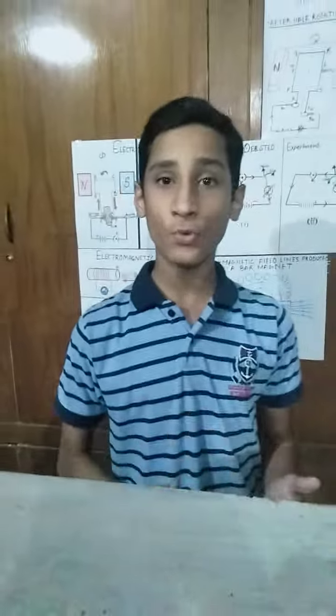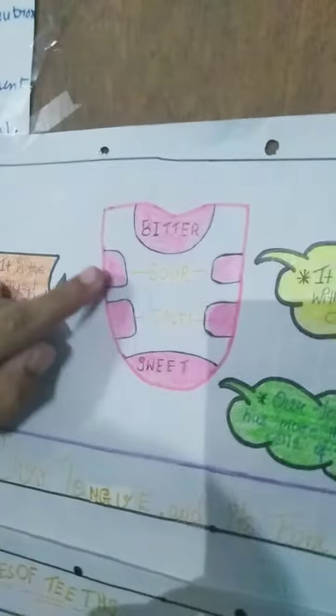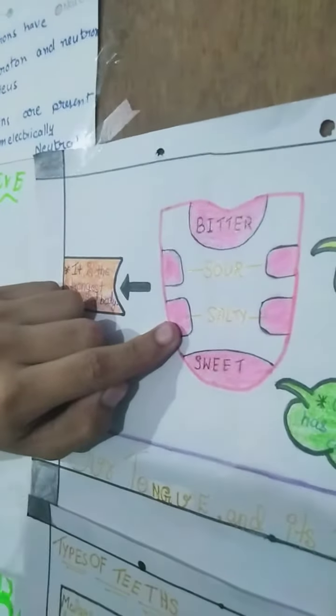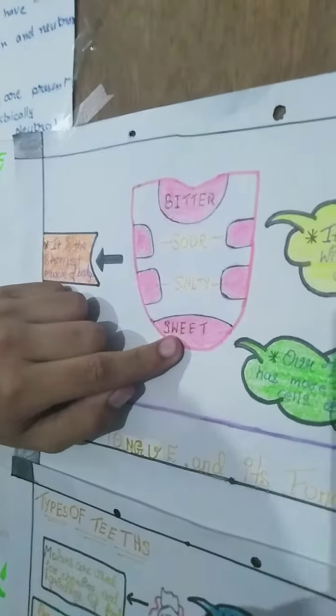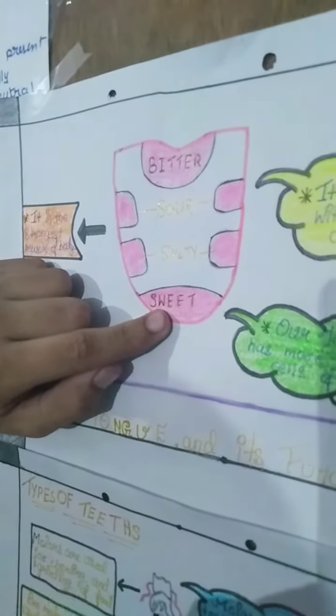Now, I will tell you how a tongue tastes food. The last part of the tongue tastes bitter food. The medium side part of the tongue tastes sour food. The second medium side part of the tongue tastes salty food, and the first part of the tongue tastes sweet food.